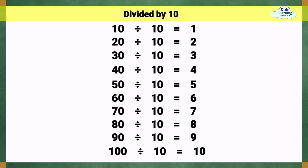Divided by 10. 10 divided by 10 equals 1. 20 divided by 10 equals 2. 30 divided by 10 equals 3. 40 divided by 10 equals 4. 50 divided by 10 equals 5. 60 divided by 10 equals 6.